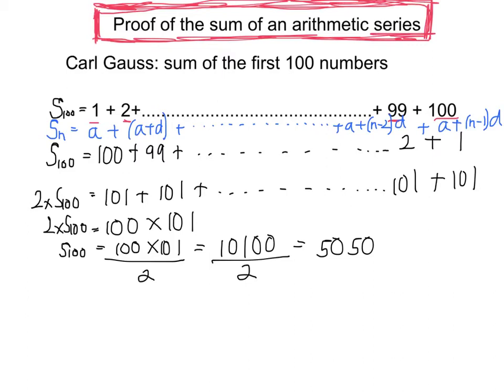Then what I do is I write it in reverse order. So my last term here is a plus n minus 1d. My penultimate term is a plus n minus 2d. Then I've got all the ones in the middle. My second term was a plus d, and my first term was a.